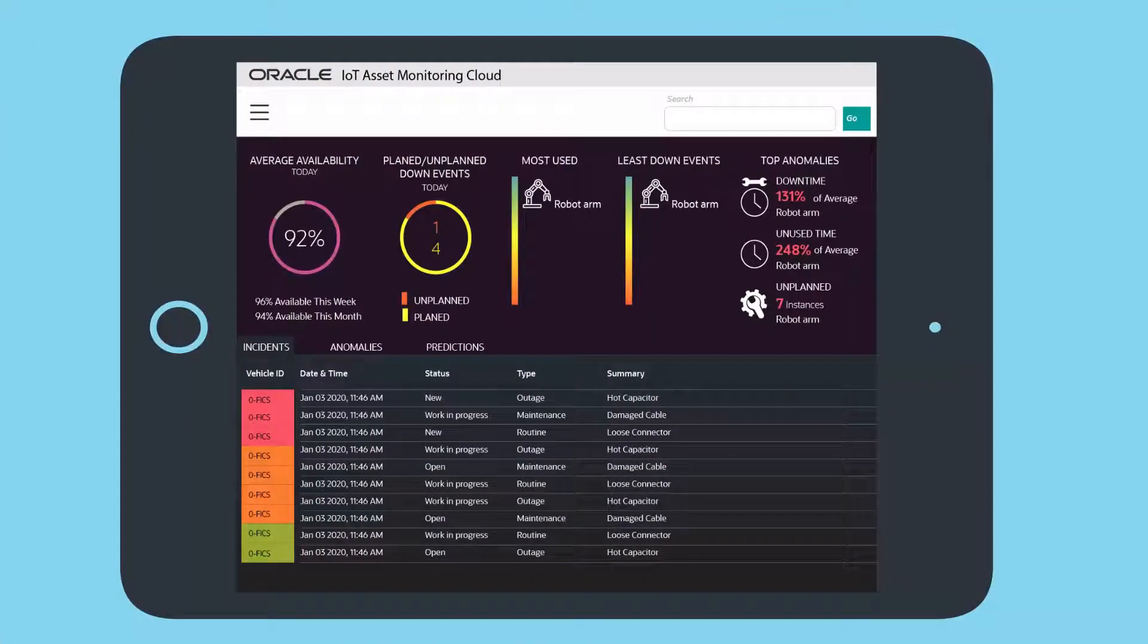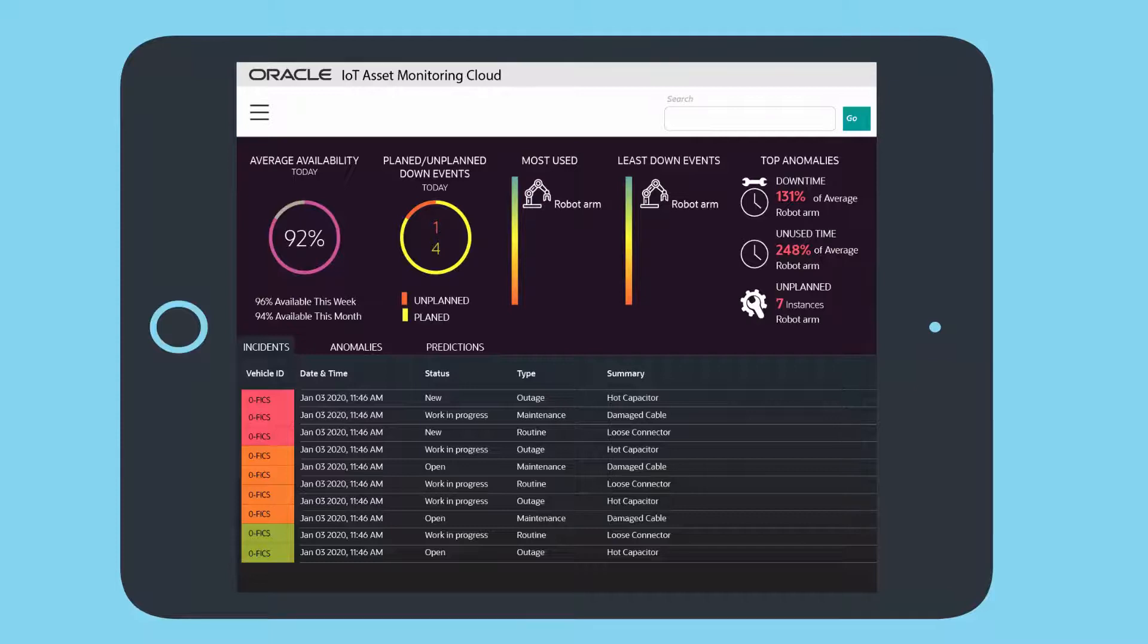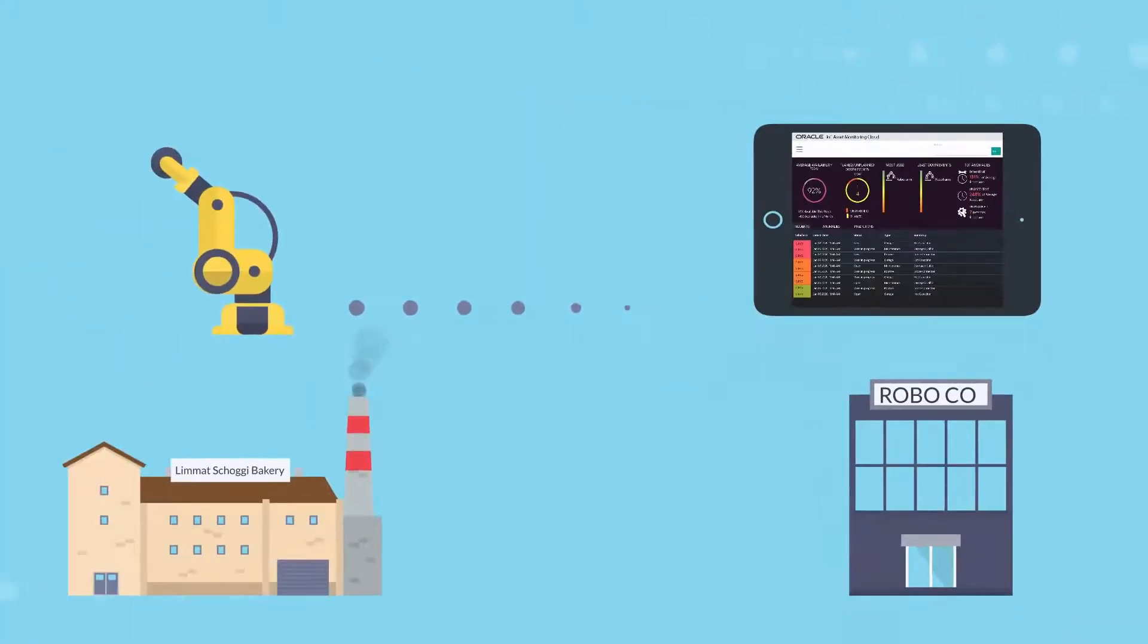The robot manufacturer uses Oracle IoT Asset Monitoring Cloud to remotely monitor the health and performance of the robot, and to predict failures before they happen.